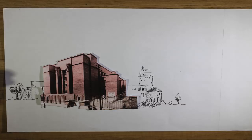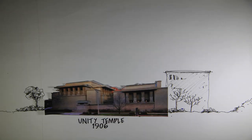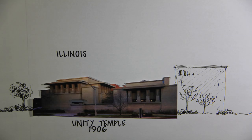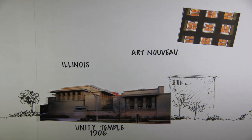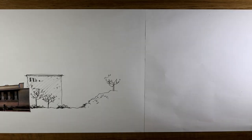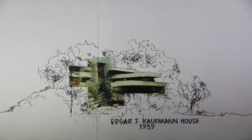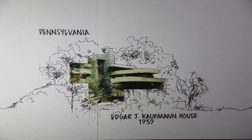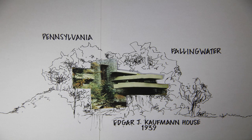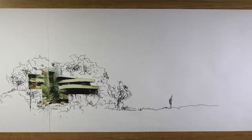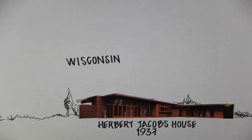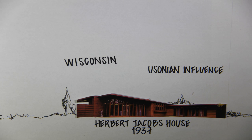Unfortunately, the Larkin Building was demolished. Unity Temple in Oak Park, Illinois displays the concept of Art Nouveau as shown through the glass ceiling. The Edgar J. Kaufman House in Mill Run, Pennsylvania — also known as the famous Fallingwater — was influenced by Japanese architecture. The Herbert Jacobs House in Wisconsin was influenced by the Usonian style of architecture.